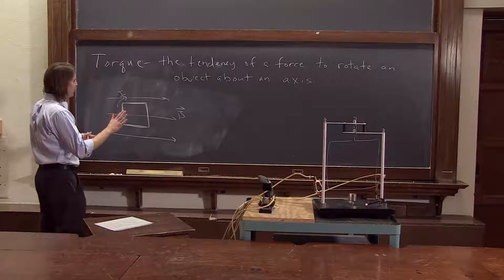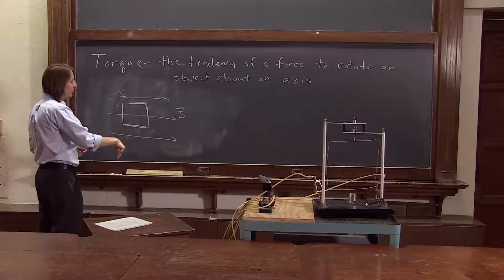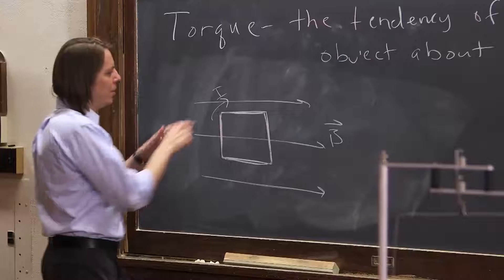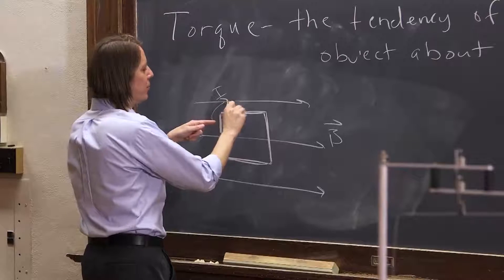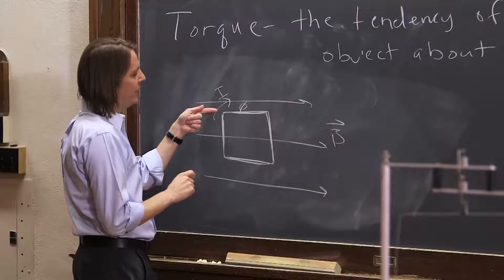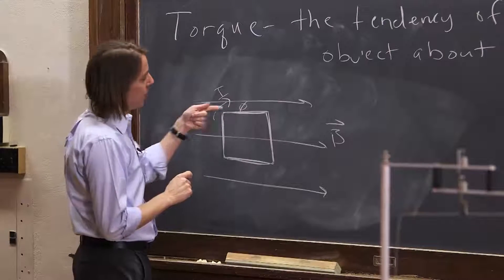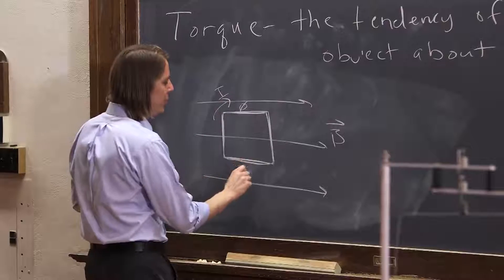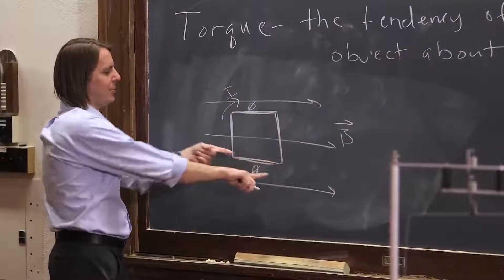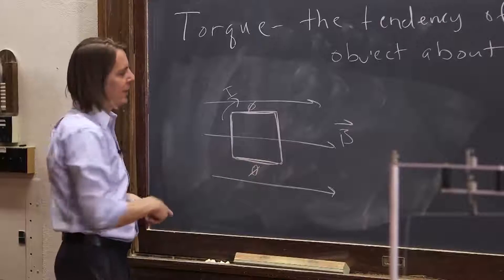Let's go back to the forces. It's I·L, the vector L along the current crossed with the B field. We know up here there's zero force because the L vector, the direction of the current, is along the B field. We know down here the force is zero because it's anti-parallel to the B field, so that cross product is zero.